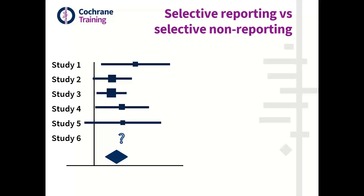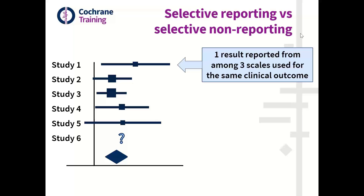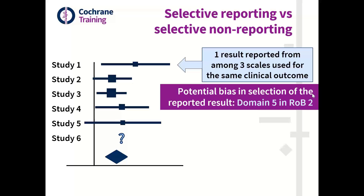When it comes to different types of selective reporting, let's say you have a meta-analysis and you come across a study where the result you're including was selected from among three different scales measuring the same clinical outcome. For example, the authors measured pain using three instruments at three different time points, yet they only report the result for one scale at one time point — that's the only result you have available to include in your meta-analysis. That scenario could lead to potential bias in selection of the reported result, and is addressed in the ROB2 tool.